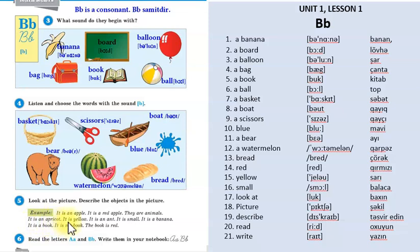It's an ant. O qarışqadır. It is small. O balacadır. It is a banana. O banandır. It is a book. O kitabdır. It is my book. O mənim kitabımdır. The book is red. Kitab qırmızıdır.